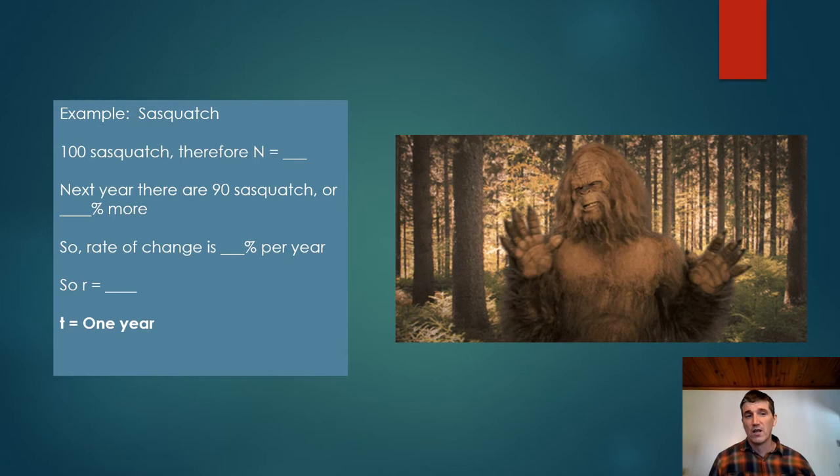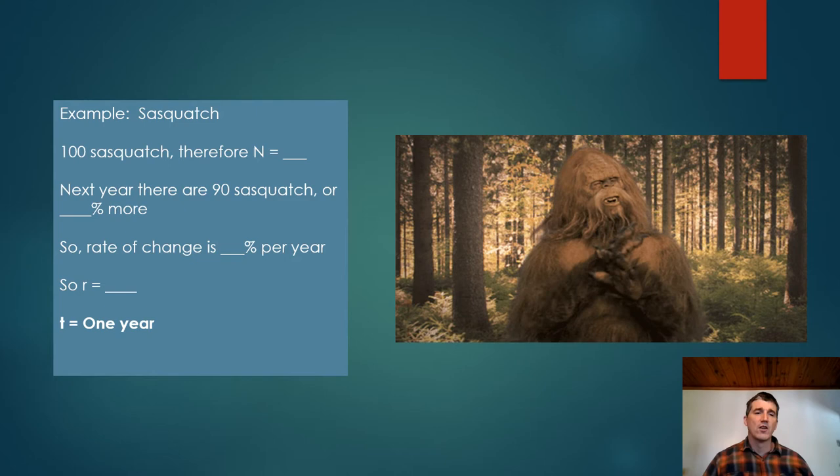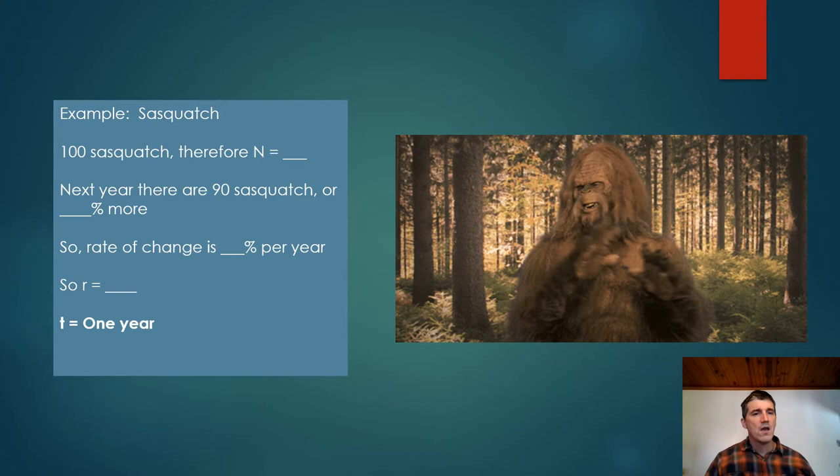If a year later, we go from 100 Sasquatches to 90 Sasquatches, then we had a 10% rate of change. So it actually decreased, so it'd be negative 10%. So if we had a negative 10% rate of change, our R would now be 0.9. So if we took 100, multiplied it by 0.9, we would have 90 Sasquatches.